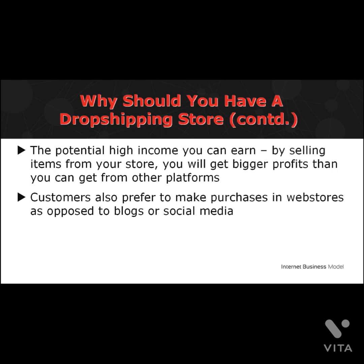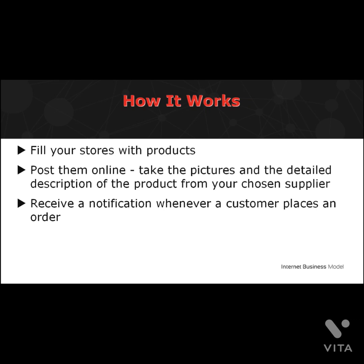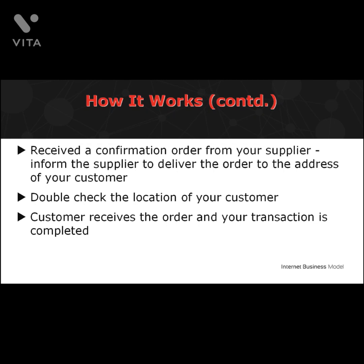By selling items from your store, you'll get bigger profits compared to other platforms. Customers also prefer to make purchases in web stores as opposed to blogs or social media. Fill your store with the products of your niche, then post them online at your social media or dropship website. Post pictures and detailed descriptions of the products from your chosen supplier. When a customer places an order and pays for it, you'll receive a notification. Contact the shipper who stocks the product, place the same order to your supplier, inform the supplier to deliver to your customer's address, double check the location, and the customer receives the order — transaction completed.